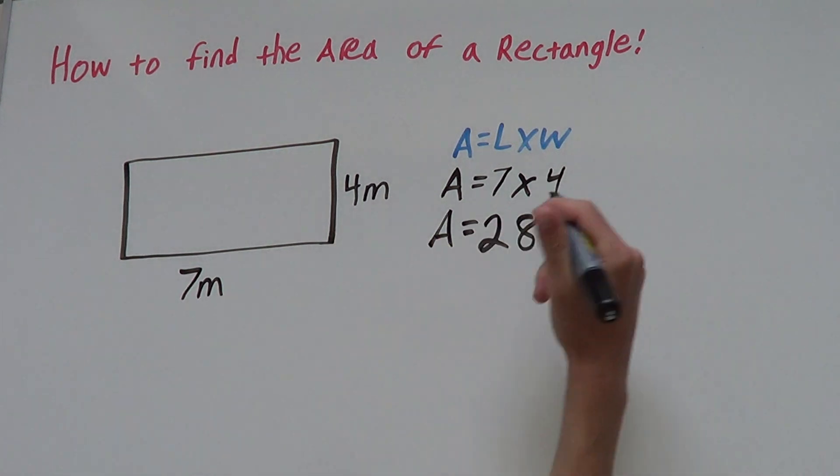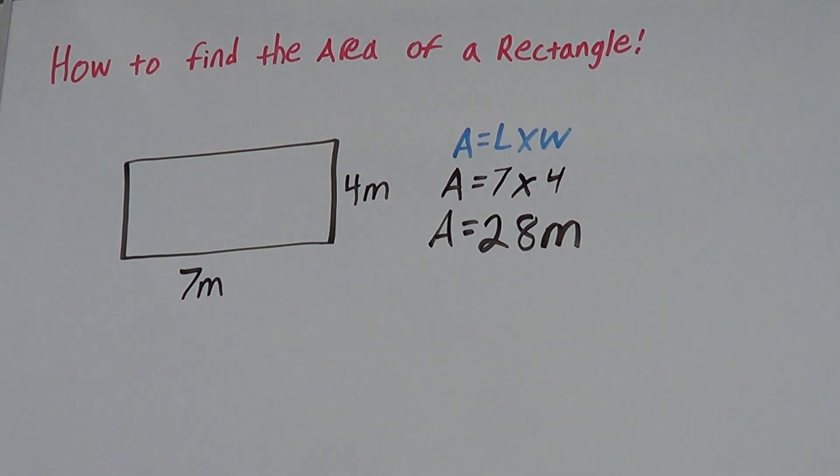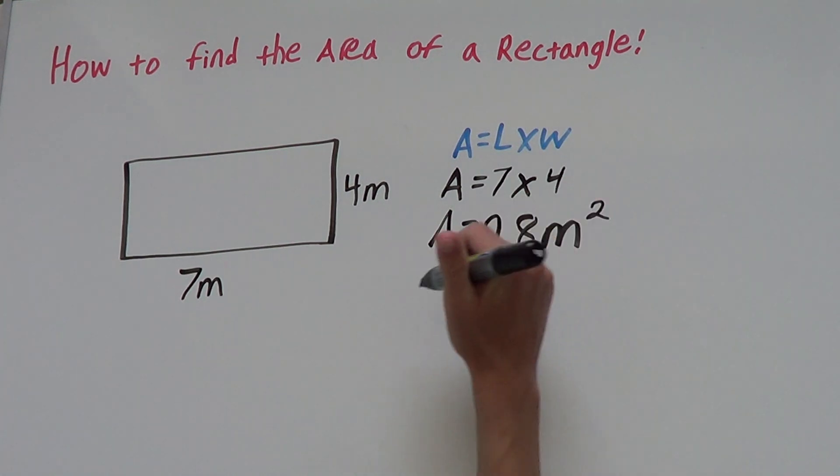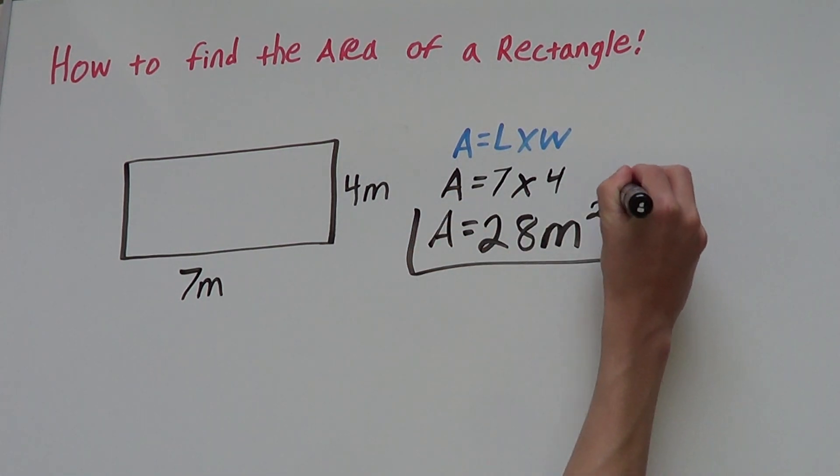We're working with meters so we say 28 meters and we're finding the area. 28 meters squared and there's our answer.